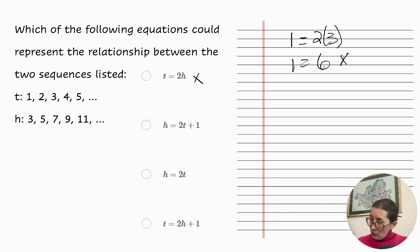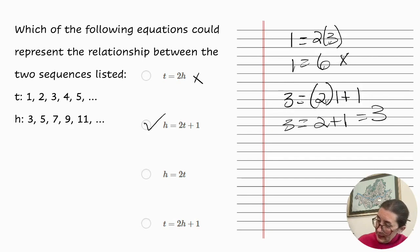The next one, H equals 2T plus 1. We'll check. 3 equals 2 times 1 plus 1. 3 equals 2 plus 1 equals 3. Yes, that is correct.